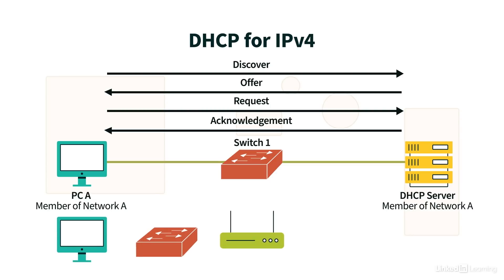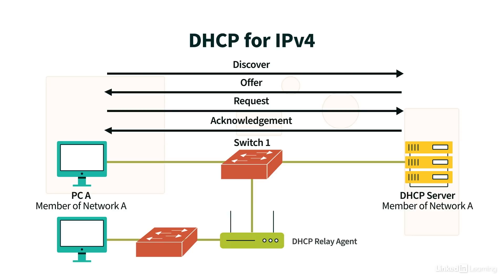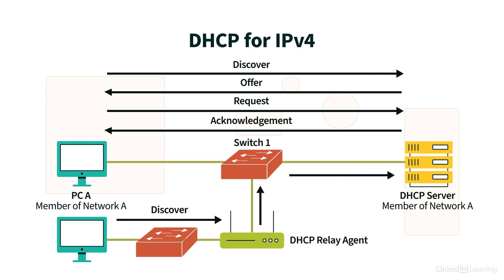There's a bit of an issue if there's a router separating the network device from the DHCP server, as we see here. When PCB sends out its Discover broadcast, that broadcast is dropped by the router. The fix is to configure the router as a DHCP relay agent, which has the unique ability to forward specific types of broadcasts — including those Discover broadcasts — to the specified destination. So here, Router 1 is configured to forward Discover broadcasts to the DHCP server. When PCB sends its Discover broadcast, Router 1 forwards it to the DHCP server, and from that point on the DORA process works as discussed.